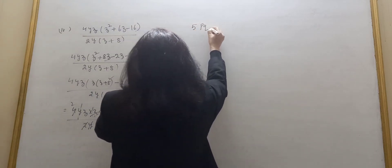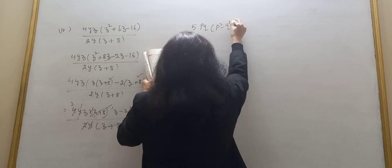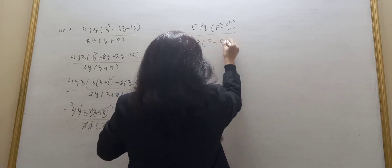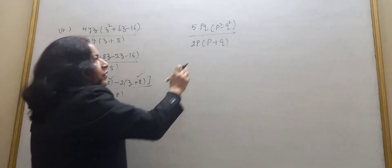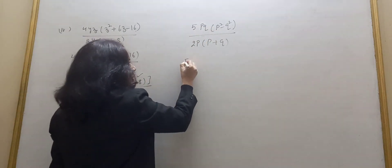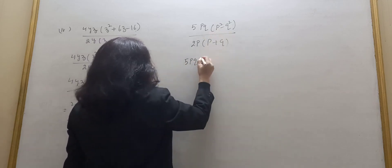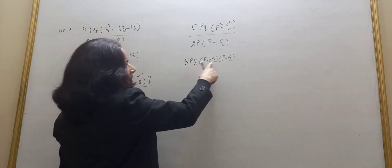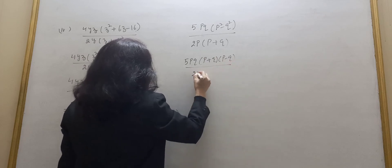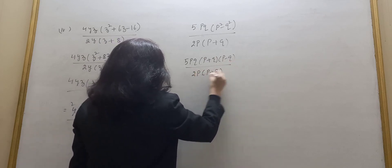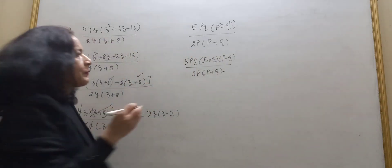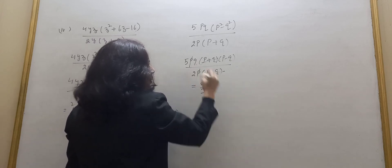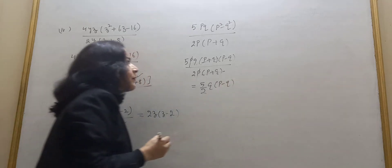Next part: 5PQ into P squared minus Q squared, and in the denominator 2P into P plus Q. Now P squared minus Q squared is P plus Q into P minus Q. This P plus Q cancels with P plus Q in the denominator. P from numerator and P from denominator cancel. Your answer is 5Q into P minus Q, divided by 2.